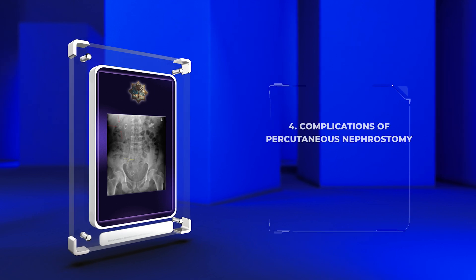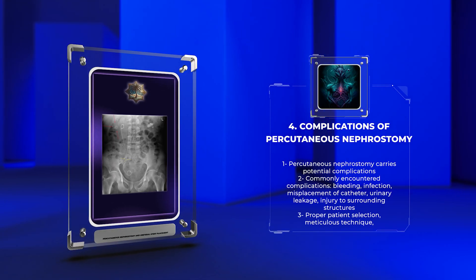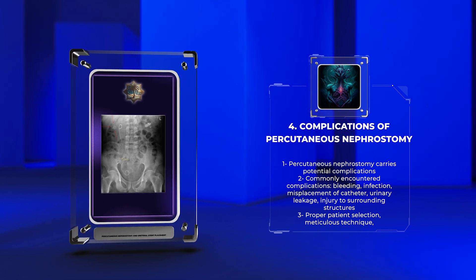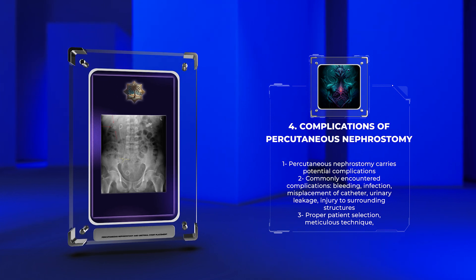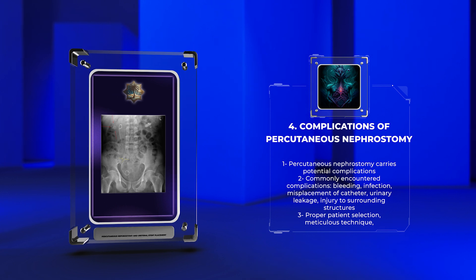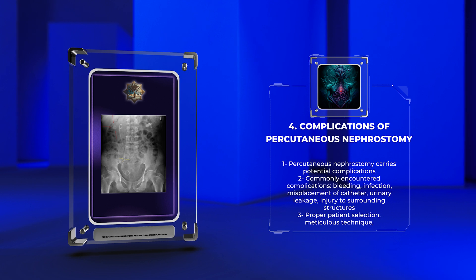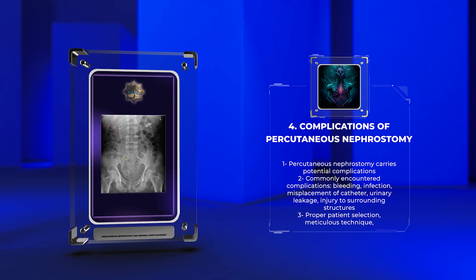Like any medical intervention, percutaneous nephrostomy carries potential complications. While it is generally considered a safe procedure, complications can occur. Some of the commonly encountered complications include bleeding at the puncture site, infection, misplacement of the catheter, urinary leakage, and injury to surrounding structures such as vessels or bowel. Proper patient selection, meticulous technique, and post-procedure monitoring are essential in minimizing the risk of complications.